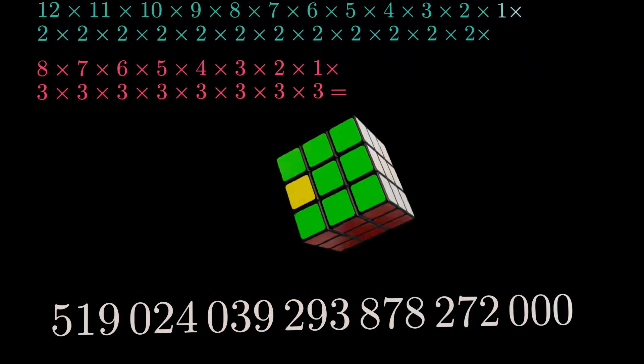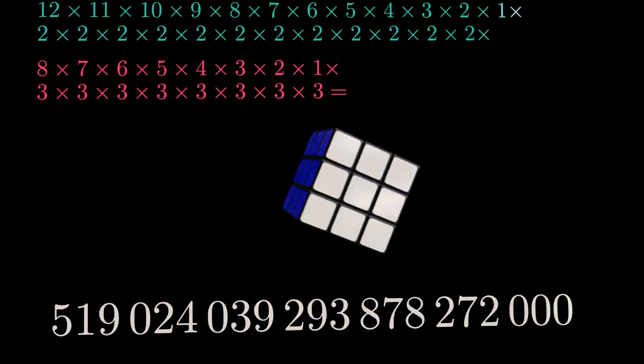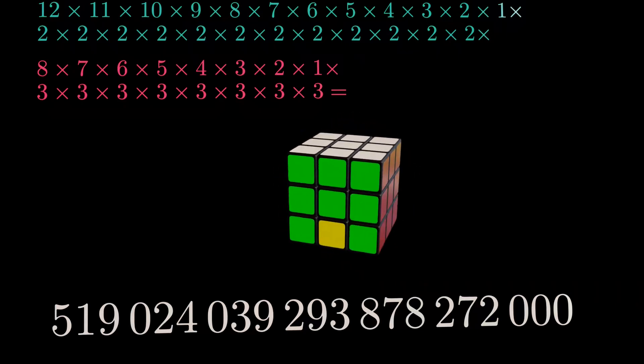So what causes these restrictions? And how do we adjust our count to get the true number of solvable states? Let us see how we can detect and remove these inappropriate configurations from our count.